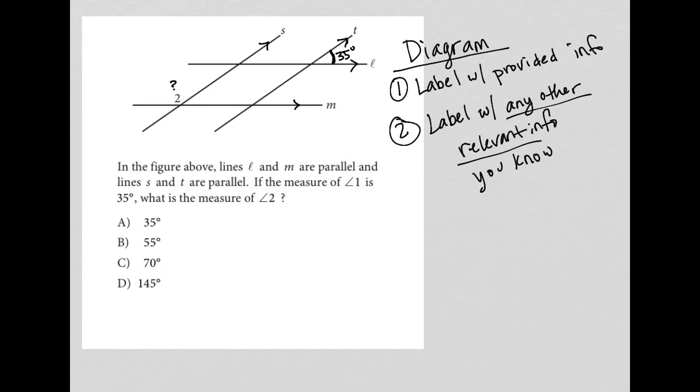So what I like to tell students to do is before looking at the answer choices, whenever you have a diagram question, just fill out as much information as you possibly can. So because I know this is 35 degrees here, I also know that this is 35 because of vertical angles.